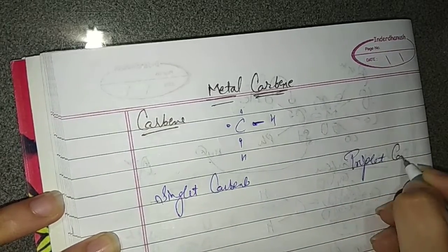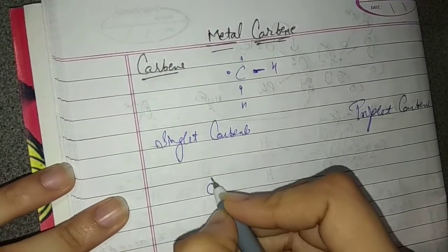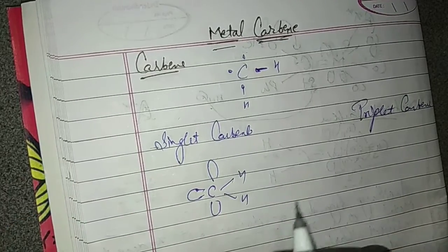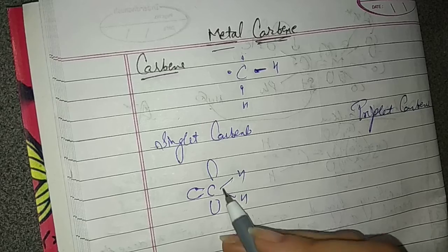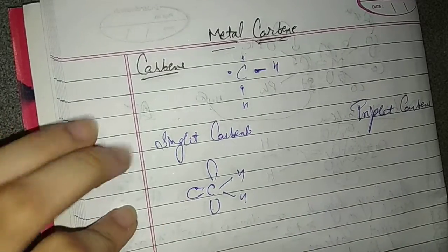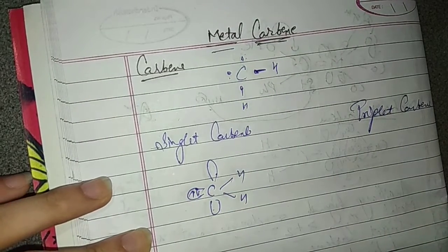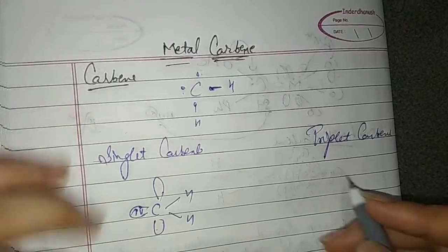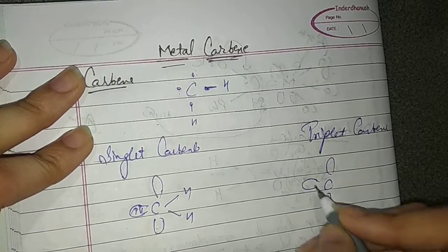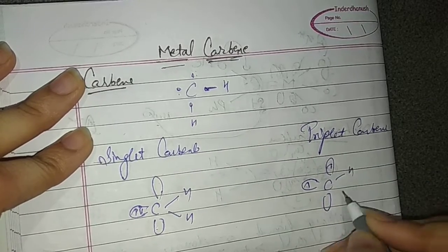So what are the differences? Carbon has P-orbitals. We have two bonds. The P-orbitals are P-X, P-Y, and P-Z. They are perpendicular to each other. The 2 electrons in singlet carbenes are in 1 orbital with opposite spin. But in triplet carbenes, the electrons are in opposite orbitals with the same spin.